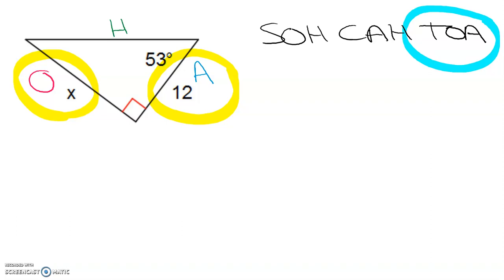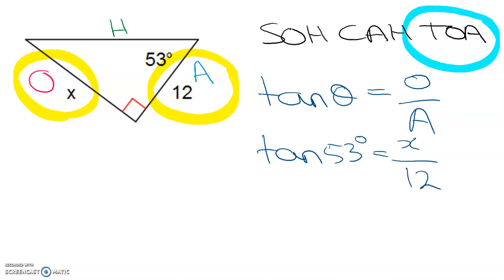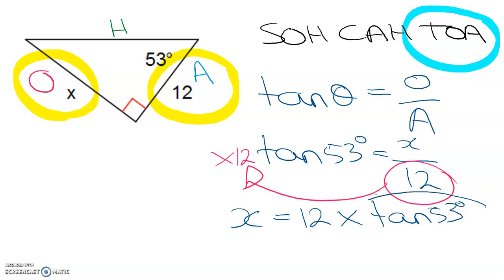Then you just write the identity substituting your values. So I can write it in the generic form to start with if you want to. So our angle is 53 so tan 53 degrees equals my unknown which is X over 12 which is A. So if I want X by itself I need to get rid of the 12 by multiplying. So X is going to equal 12 times tan 53 and you go to your calculator to find out the value of tan 53 multiply by 12 and that gives you 15.9.